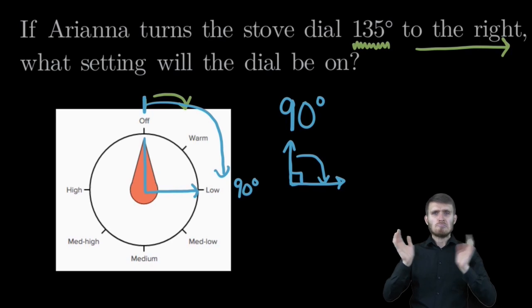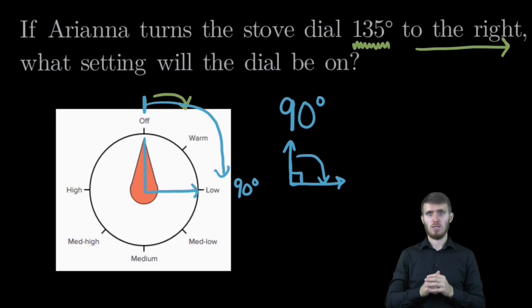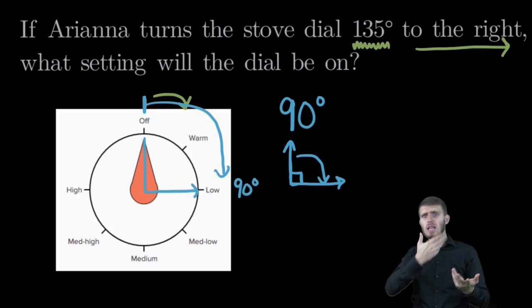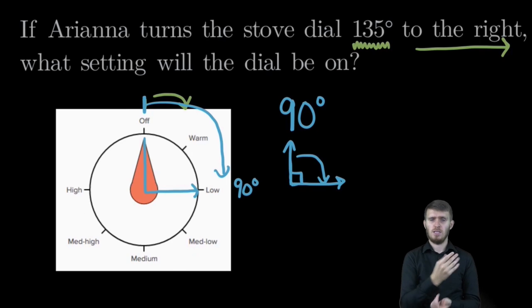But we're not going 90, we're going 135, which is more than 90 degrees. So here's one clue. We know we're going farther than the low setting. We don't know how much farther, but we're definitely going to go past the low setting.